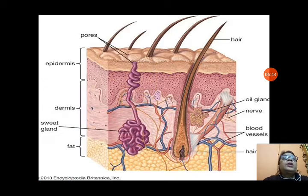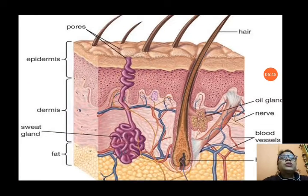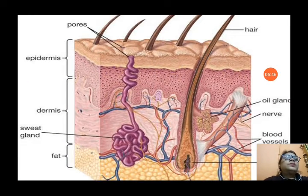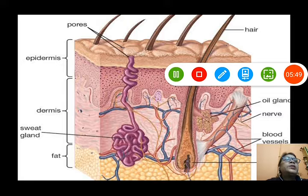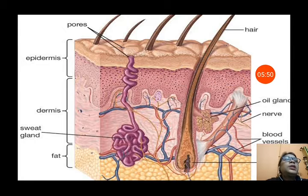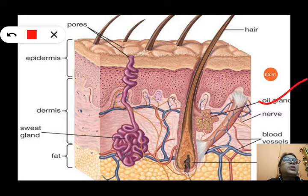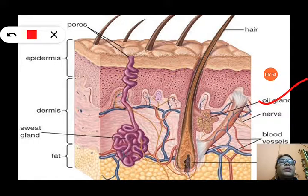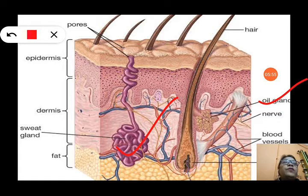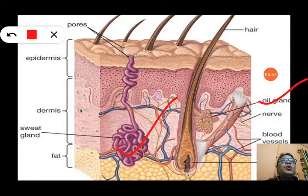You can see the internal structure of the skin. There are oil glands that keep your skin oily, and there is a sweat gland that takes out waste in the form of sweat from your body.